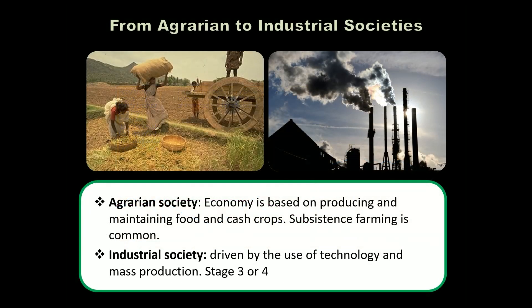A pre-industrial society means an agrarian society — an economy based on producing and maintaining food and cash crops. Subsistence farming is common, where farmers grow just enough food to get by with very little sold for profit. Industrial societies are driven by technology and mass production. Post-industrial economies include jobs not directly tied to mass production — web designers, lawyers, educators — types of work that would have no parallel in pre-industrial societies.